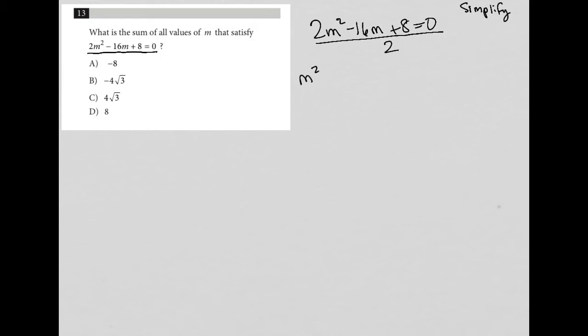which gives me m squared minus, actually, divide that by 2 as well, m squared minus 8m plus 4 equals 0.